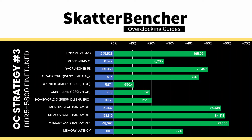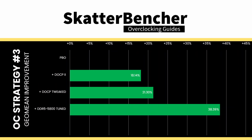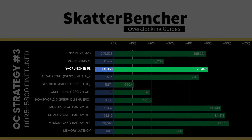Tuning the memory timings might not seem like a big change in our overall system configuration, but it can have a big impact on performance, as we've seen in previous ScatterBencher guides. The GeoMean performance speedup improves an incredible 17%, and we get a maximum benchmark improvement of plus 49.83% in Y-Cruncher.